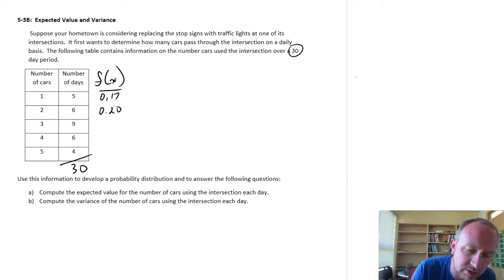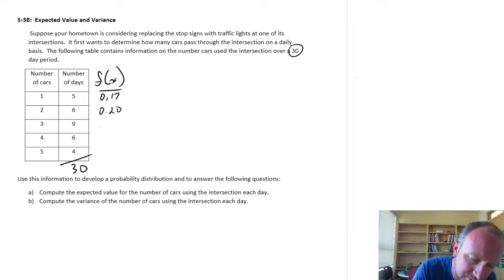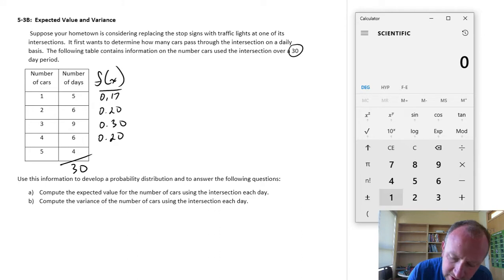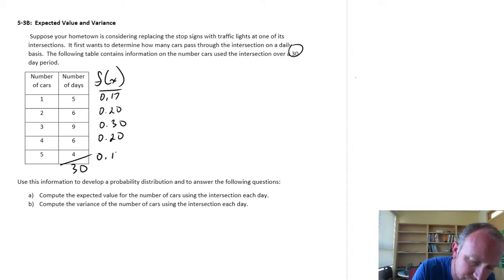Here's 0.2. The next one is 9 out of 30, which is 0.3. Six, that's again 0.2. And finally this last one is 4 out of 30, so 0.13.